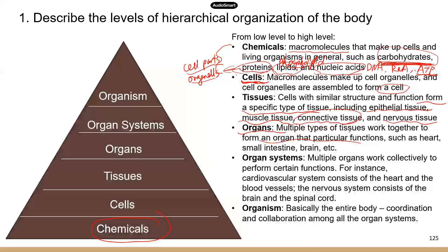The next level is organ systems — each organ system has multiple organs working collectively. For example, the nervous system consists of the brain and spinal cord, and some peripheral nerves. The cardiovascular system is the heart and blood vessels. The digestive system is very large — it consists of the mouth, throat, esophagus, stomach, small intestine, large intestine, and accessory organs like the liver, gallbladder, and pancreas.